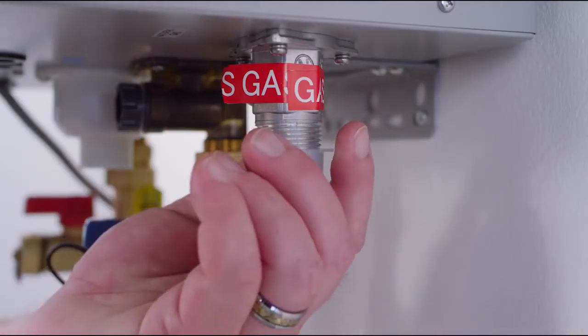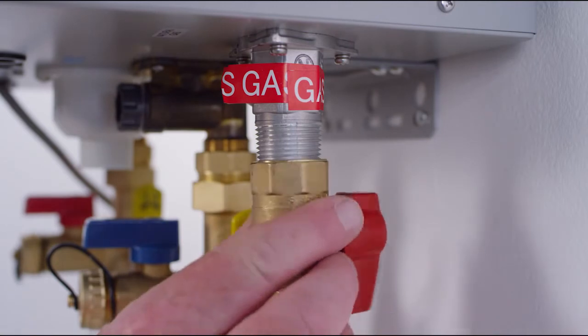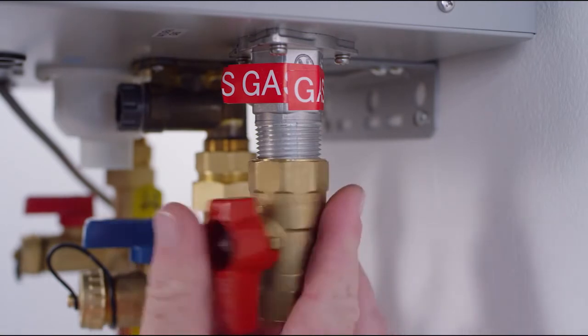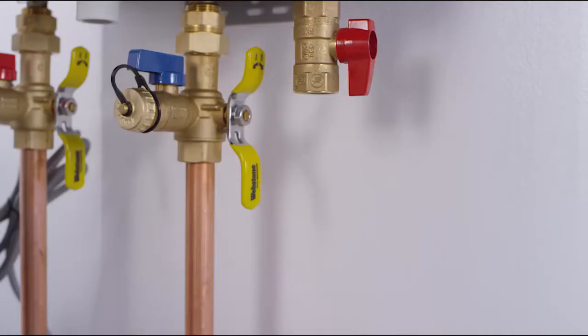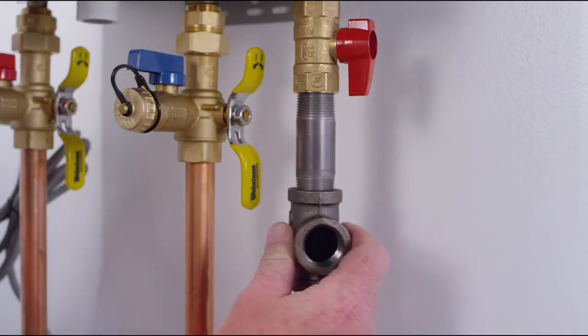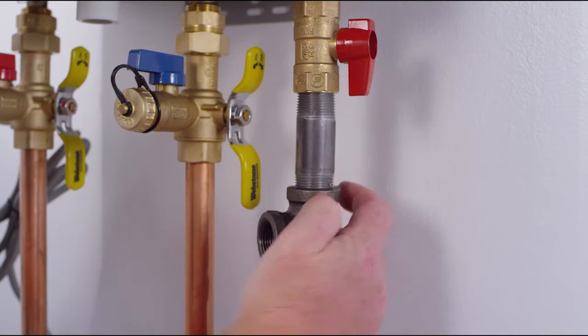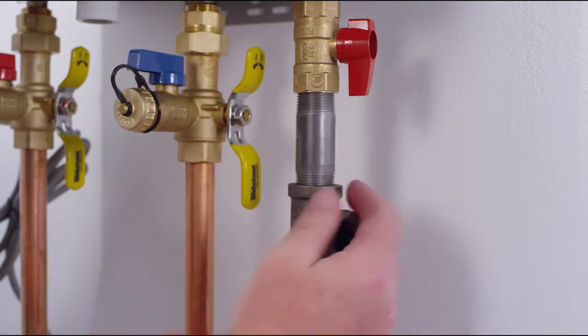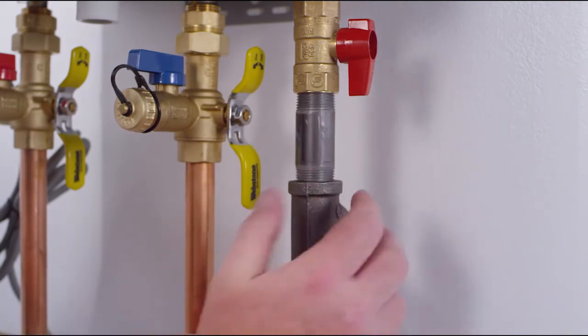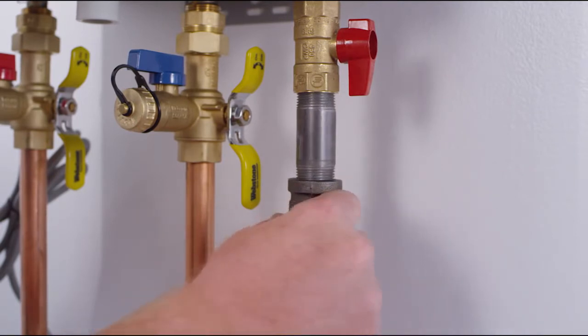Install the gas shutoff valve included with the water heater directly on the gas fitting on the bottom of the water heater. Connect the gas piping to the valve. All Rheem tankless water heaters are able to be installed using half inch gas line, making the replacement of a tank type water heater with a Rheem tankless water heater easier and more cost effective.